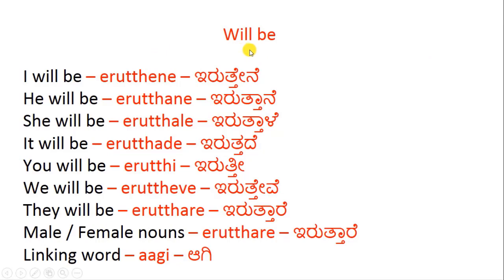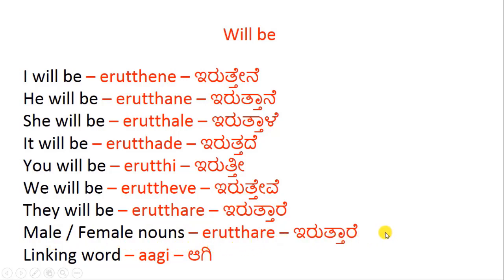'Will be' is expressed using these suffixes: for 'I will be' we use irutthene; for 'he will be' — irutthane; for 'she will be' — irutthale; for 'it will be' — iruttade; for 'you will be' — iruththi; for 'we will be' — irutthetve; for 'they will be' — irutthare. For some male and female nouns we use iruttare also.